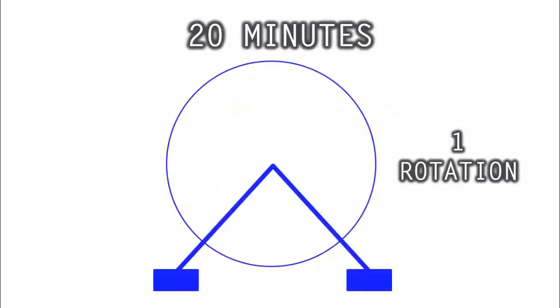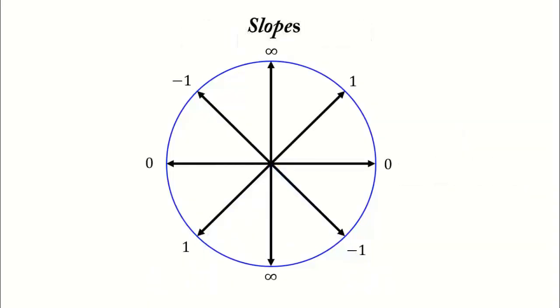So now, we can simply calculate slope of different instances as the giant wheel rotates, which takes 20 minutes for one rotation. So here are already calculated slopes for one complete rotation of the giant wheel. At 0 minutes, or when it starts, the slope is 0. After 2.5 minutes, the slope is 1. At 5 minutes, the slope is infinite, or undefined. At 7.5 minutes, the slope is negative 1. At 10 minutes, the slope is back to 0.